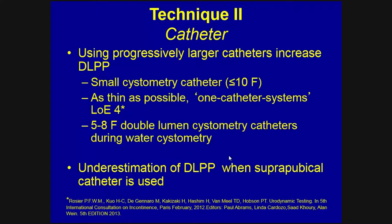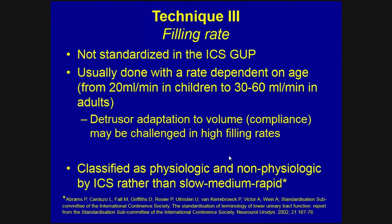Most studies are performed with 5 to 8 French double-lumen cystometric catheters with water cystometry. Underestimation of DLPP is possible when a suprapubic catheter is used. There is no standardization about filling rate in the ICS Good Urodynamic Practice Report. It is usually done at a rate dependent on age in children, calculated by different methods. Bladder adaptation to volume may be challenged at high filling rates; therefore, our committee prefers a slow to medium filling rate in these studies.